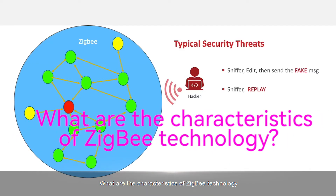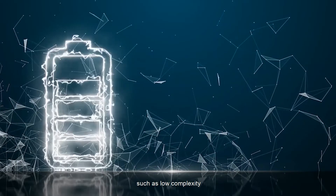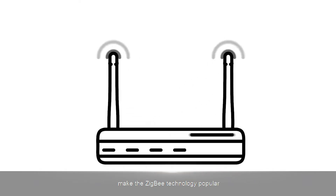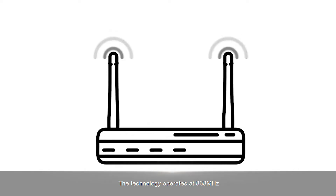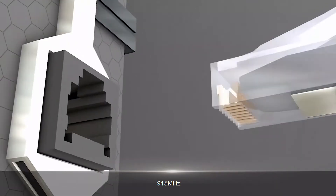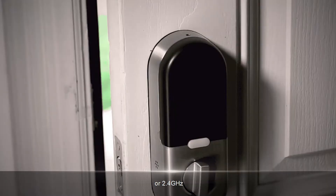What are the characteristics of ZigBee technology? ZigBee technology features low-complexity, low-power consumption, low-speed, low-cost, self-organizing network, high reliability, and beyond line of sight, making ZigBee technology popular. The technology operates at 868 MHz, 915 MHz, or 2.4 GHz.